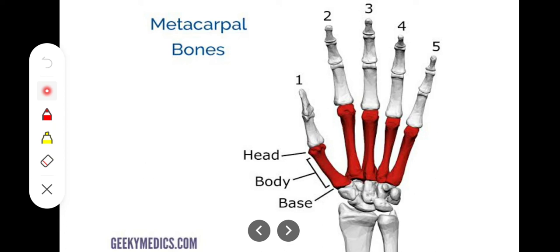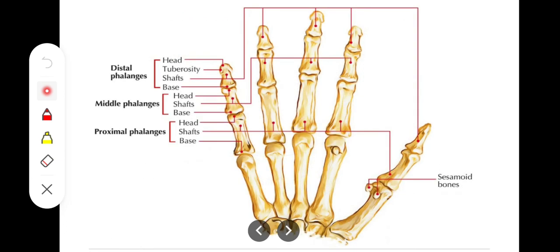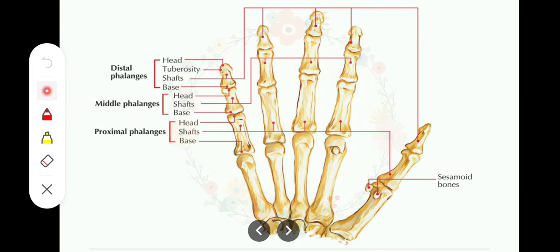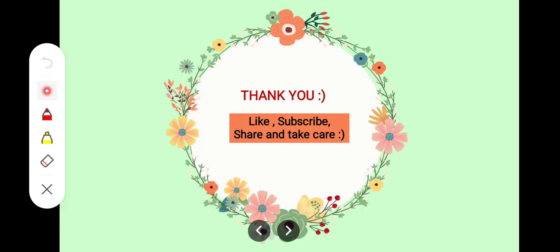The phalanges are the bones of the fingers and are 14 in number. There are proximal, middle, and distal sets of phalanges, each having the same three parts as the metacarpals: the base, body, and head. The thumb has only two phalanges while the rest of the fingers have three. With that, we are done with the carpals, metacarpals, and phalanges of the upper limb. Thank you so much, take care.